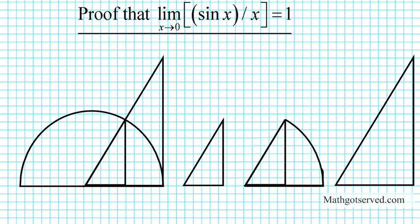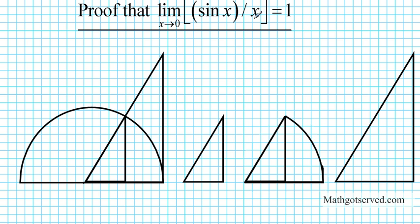We are going to start out with a sector of a circle and two triangles. If you take a look at this construction, we have a sector with angle x. We can create a triangle inside, a sector, and then a bigger triangle. I've extracted all three shapes so you can distinctly see how I am going to generate the areas. This angle is x for each shape — we have two triangles and a sector.